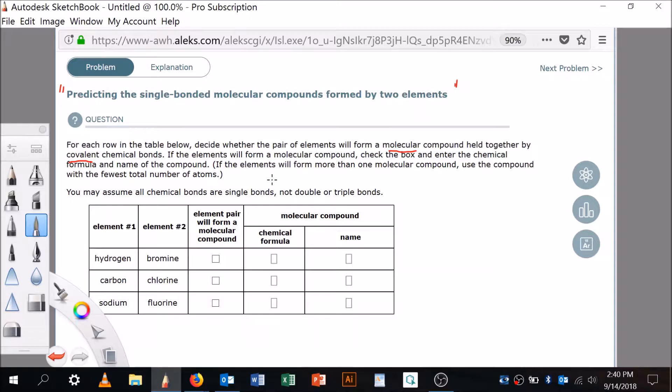If the elements will form more than one molecular compound, use the compound with the fewest total number of atoms. So we're going to assume that they're all single bonds. And we're going to go through here and look at element one, element two.